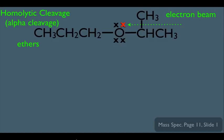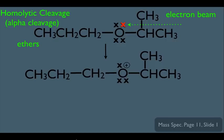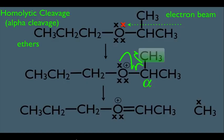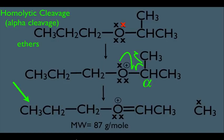With ethers, you can also alpha cleave on the other side of the oxygen. Starting again from the radical cation, we locate the alpha carbon on the right-hand side of the oxygen. The electron movement is the same: the bond following the alpha carbon breaks, and a new double bond forms between that alpha carbon and the oxygen. The neutral methyl fragment wouldn't be detected, but the charged fragment would, so we should expect to see a peak at 87.